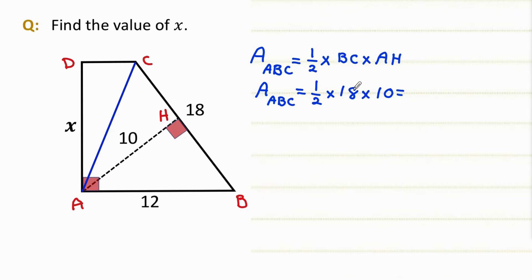10 times 18 is 180 divided by 2 is 90. So the area of this triangle when BC is the base and AH is the height is 90.